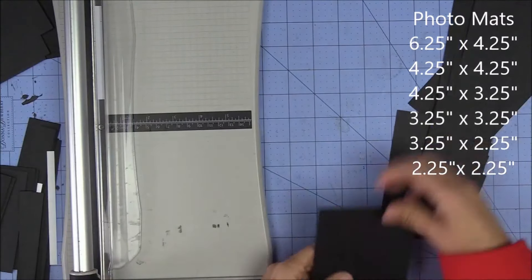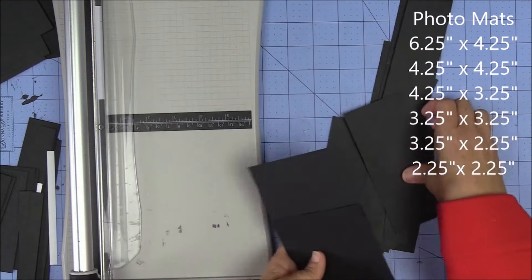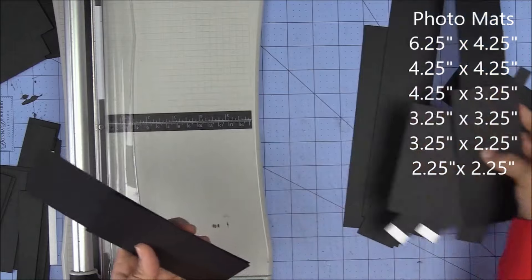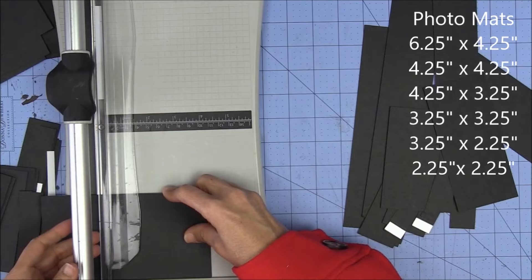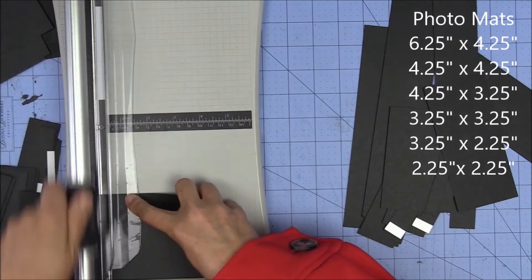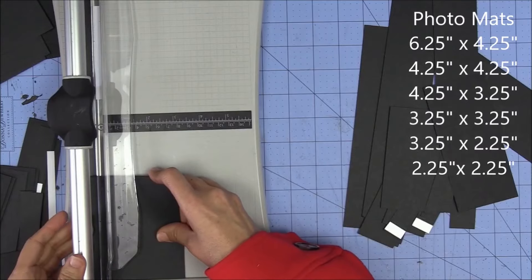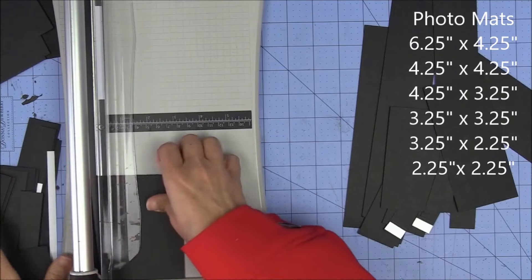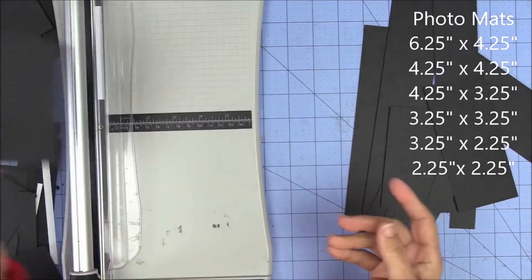My next size is 4 and a quarter by 3 and a quarter. So I look for that. It's looking like I may be able to get 2. 4 and a quarter by 3 and a quarter, and this is for the 3 by 4. So we've got, oh 3, excuse me, I got 3 out of that.